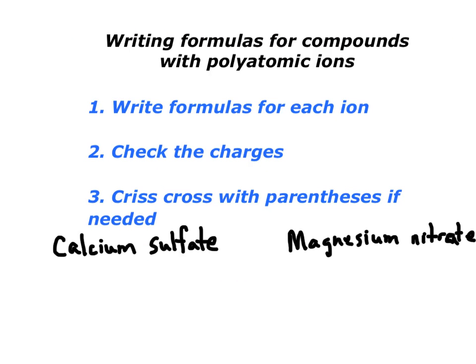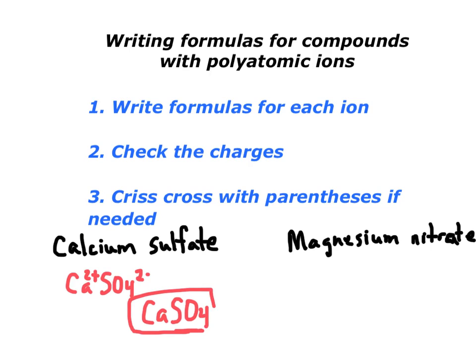Now we need to write formulas for compounds with polyatomic ions. First, write the formula for each ion, check the charges, crisscross, and put parentheses if needed. For calcium sulfate: calcium is Ca, and sulfate from the back of the periodic table is SO4 with a 2− charge. Calcium has a 2+ charge — they cancel each other out, so no crisscross needed. The formula is just CaSO4, no parentheses. You only need parentheses if you need multiples of the polyatomic ion.